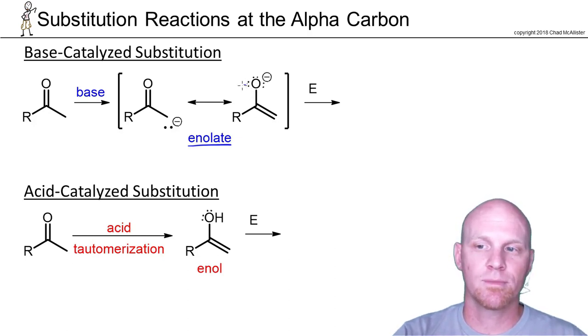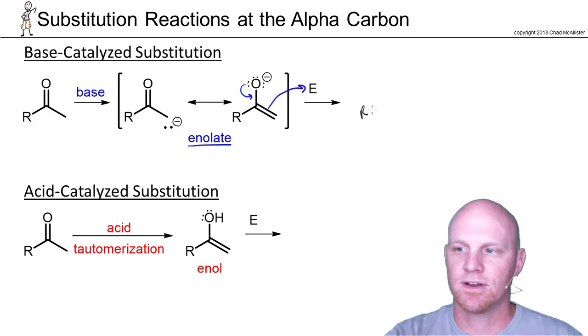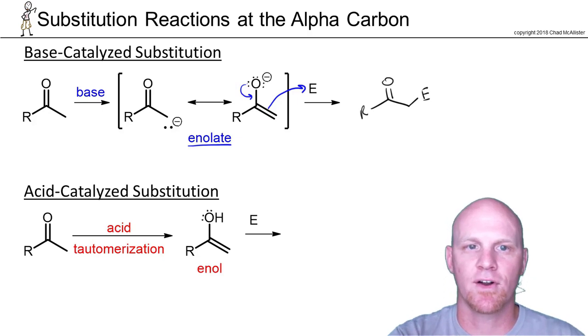If you use the major resonance contributor, we'll kick those electrons down there and attack the electrophile. Your result here is now your electrophile is attached at that alpha carbon.